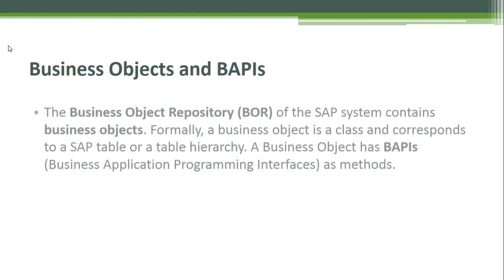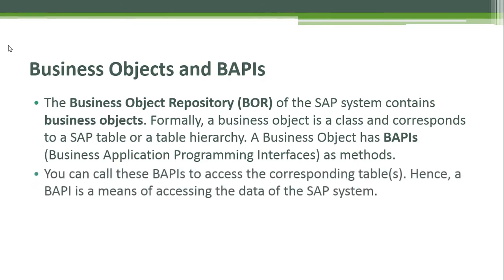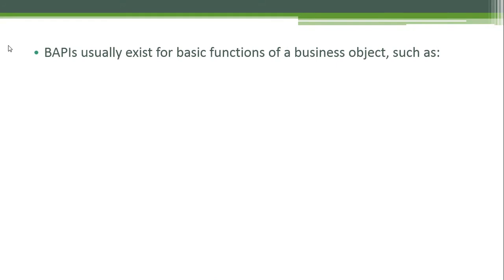The Business Object Repository (BOR) of the SAP system contains business objects. Formally, a business object is a class and corresponds to an SAP table or a table hierarchy. A business object has BAPIs, or Business Application Programming Interfaces, as methods. You can call these BAPIs to access the corresponding table — hence a BAPI is a means of accessing the data of the SAP system.